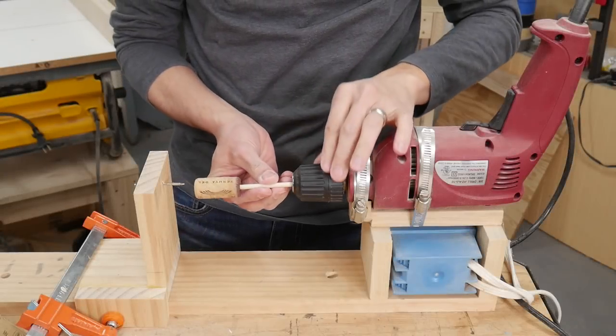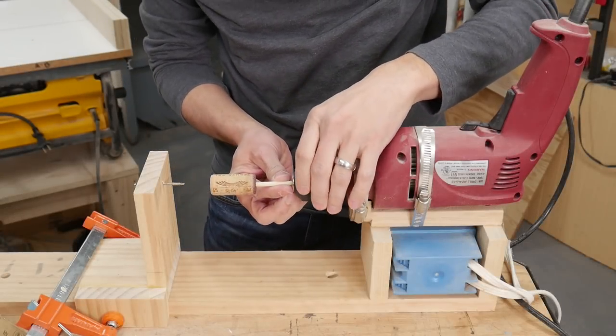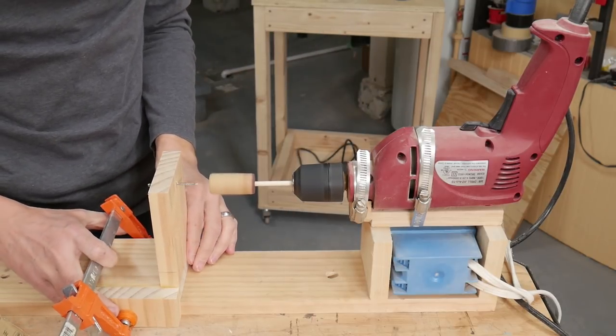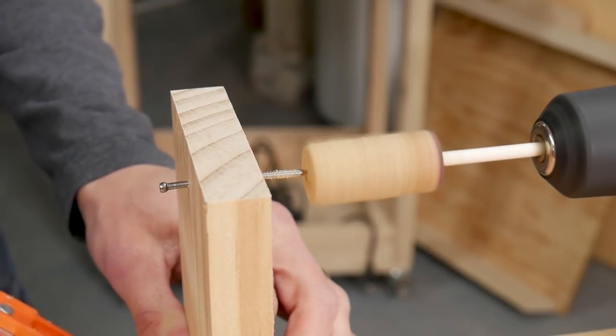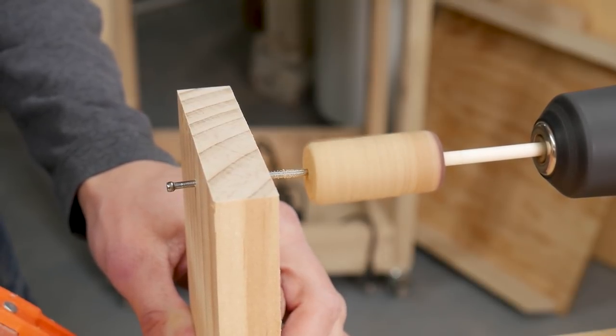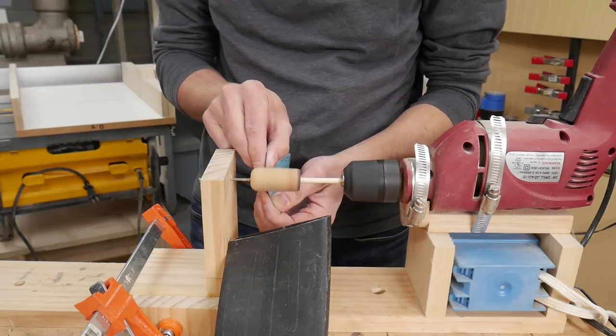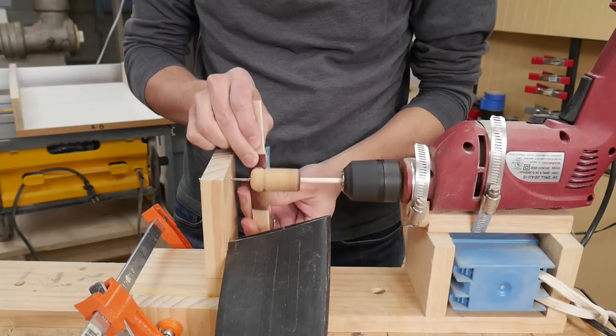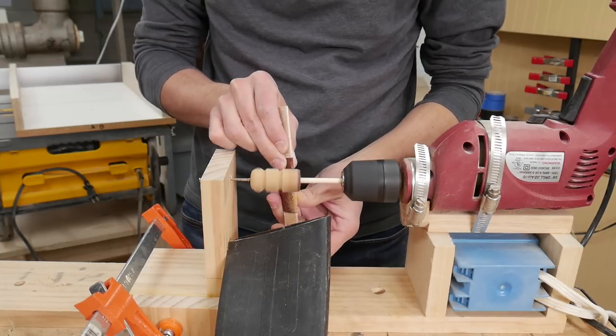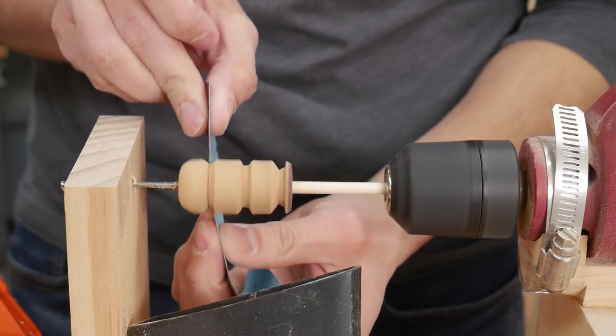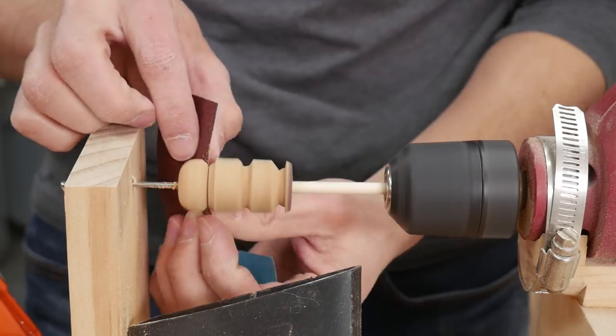I put each cork in my homemade drill-powered mini lathe. I used sandpaper to shape a few of the corks into snowman shapes. A few years ago I made a video showing how I made this lathe. There's a link down in the video description if you're interested.